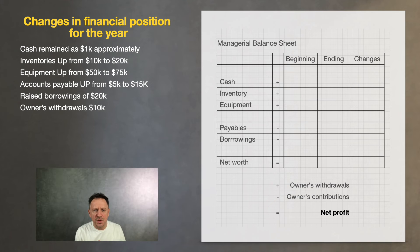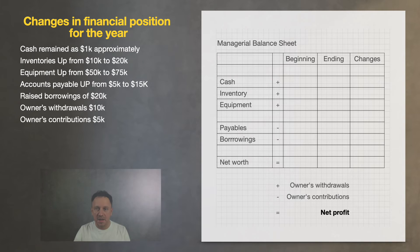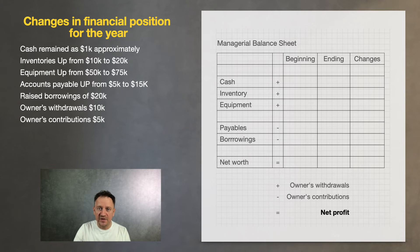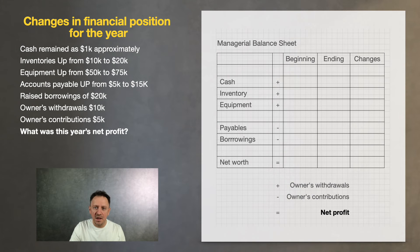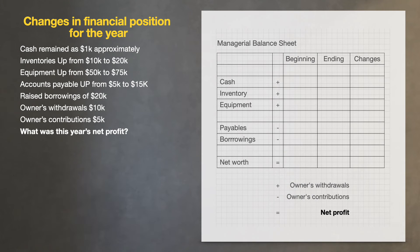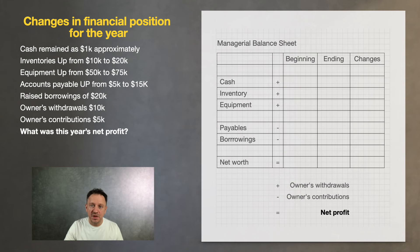What we also know is that his drawings taken from the business were 10k this year, and his contributions were 5k. Based only on the facts available, what was the net profit of our man this year? And most interestingly, how might you explain this result? You may pause and try it yourself, or let's do it together in just 10 seconds.